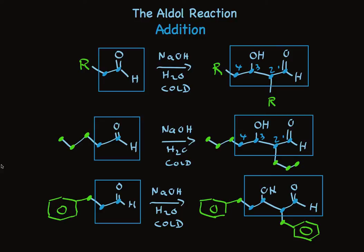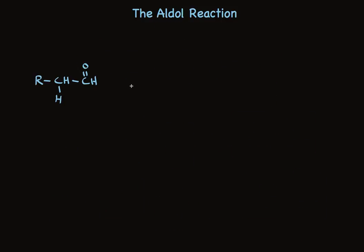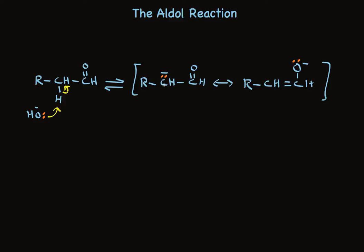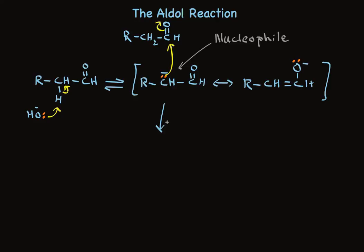The aldol addition product always fits the same pattern. It might be easier to remember if we take a careful look at the mechanism. The alpha hydrogen of an aldehyde is acidic, and in the presence of base it's reversibly removed. This puts a negative charge on the alpha carbon. That hydrogen is especially acidic because when it's removed, the anion is resonance-stabilized. This carbon has a lone pair of electrons that can be shared — that carbon can act as a nucleophile. And we know that nucleophiles add to carbonyl compounds, so when you put those two things together, it's not such a big surprise that an aldehyde reacts with another molecule of itself.